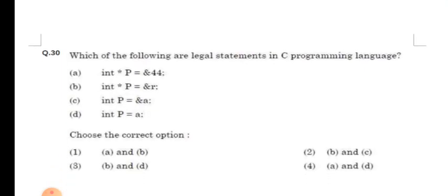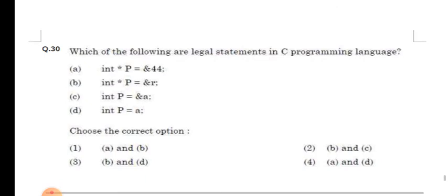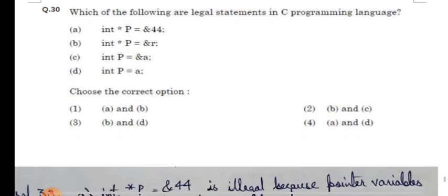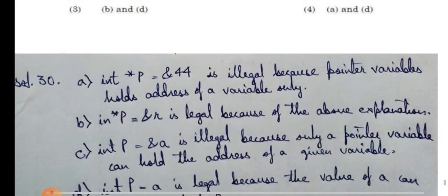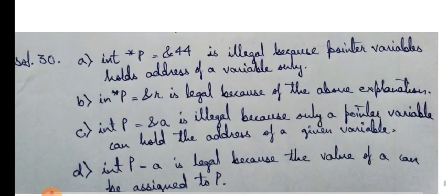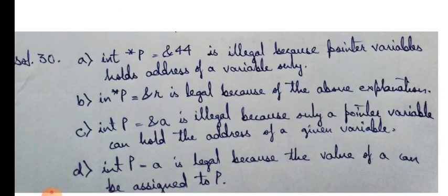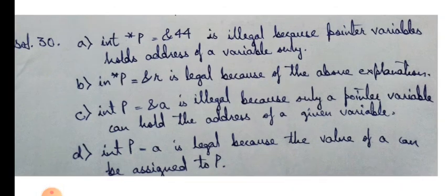And in our last question, which of the following are legal statements in C programming language? We have been given four statements and we have been asked which of these are legal. So, let's see the solution. Int char p is equal to ampersand 44 is illegal because pointer variables holds address of a variable only. Int char p is equal to ampersand r is legal because of the above explanation. Int p is equal to ampersand a is illegal because only a pointer variable can hold the address of a given variable. And at last, int p is equal to a is legal because the values of a can be assigned to p.